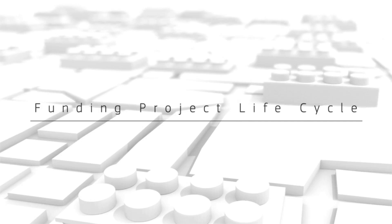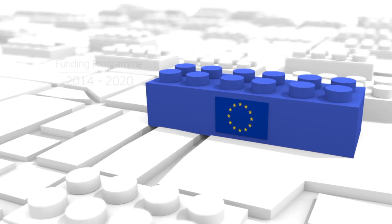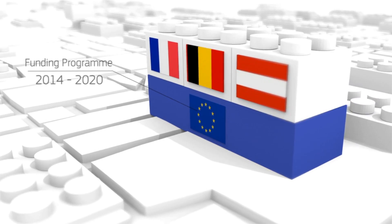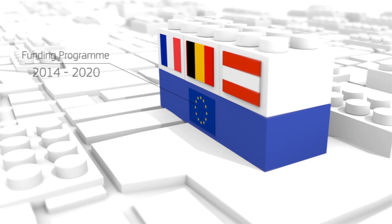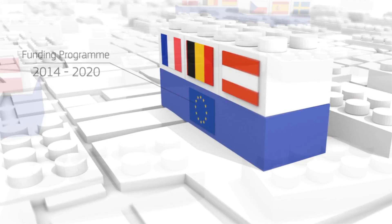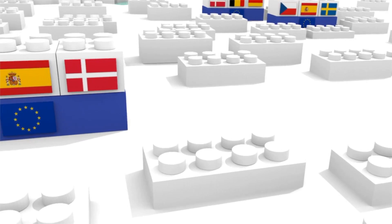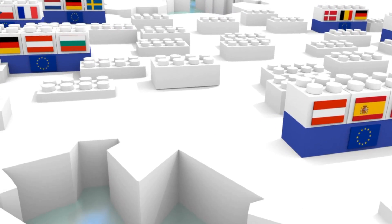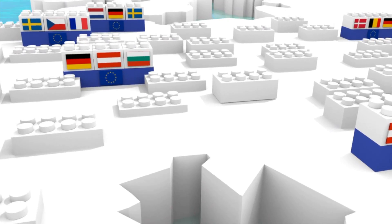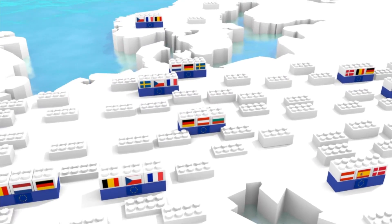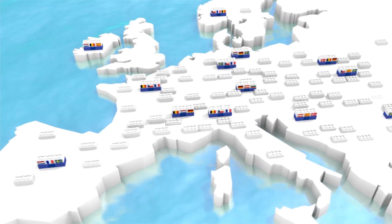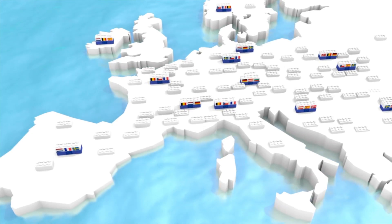Horizon 2020 is the European Union's research and innovation funding program, which started in 2014 and will run until 2020. It supports researchers from public and private organizations, including small and medium-sized enterprises, enhances EU international research and third-country participation, and integrates social sciences and humanities.